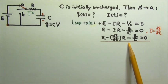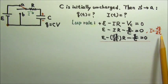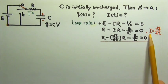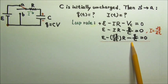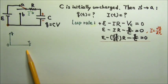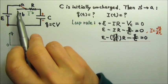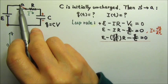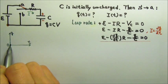We can then solve this differential equation and find Q as a function of time, then take its time derivative to get the current as a function of time. We will work on solving this differential equation in another lesson. Right now, we will sort of guess the answer by plotting a charge as a function of time graph. Initially, the capacitor is uncharged, so the moment after we switch over to A, there is still no charge on the capacitor — the initial charge is zero.